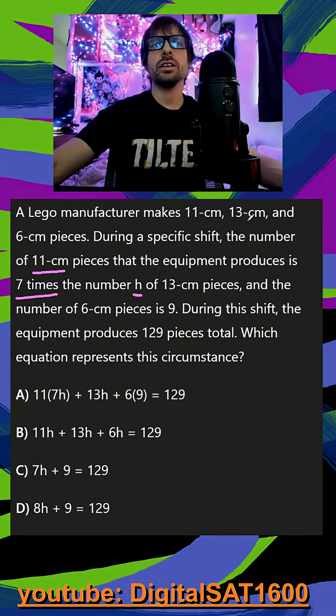So we have the start of an equation here. If I make H 13 centimeter pieces, I will make 7H 11 centimeter pieces because it's 7 times as much. They also tell us that they made 9 6 centimeter pieces.